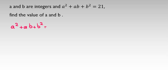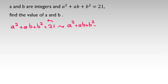Now, what should we do here? If I pay attention to the degree — the power degree is two for a — we can say it is a quadratic function in terms of a. If I take all things to one side, 21 to the left-hand side, it will be a squared plus ab plus b squared minus 21 equal to zero. I want to solve this as a quadratic function in terms of a.